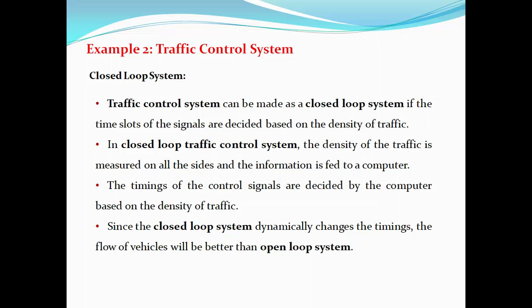We will see how this traffic control system acts under a closed loop system. The traffic control system can be made a closed loop system if the time slots of the signals are decided based on the density of traffic. In a closed loop traffic control system, the density of traffic is measured on all the sites and the information is fed to a computer. The timings of the control signals are decided by the computer based on the density of traffic. Since the closed loop system dynamically changes the timings, the flow of vehicles will be better than in an open loop system.